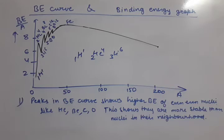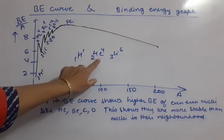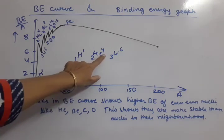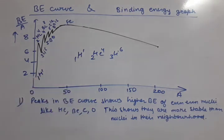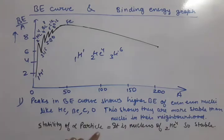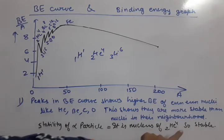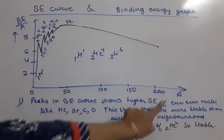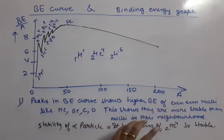This also answers the question: why is the alpha particle stable? Because the alpha particle is the nucleus of 2He4, which is an even-even nucleus. So the stability of the alpha particle is because it is an even-even nucleus with high binding energy.